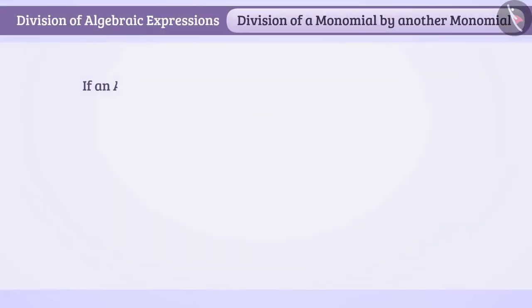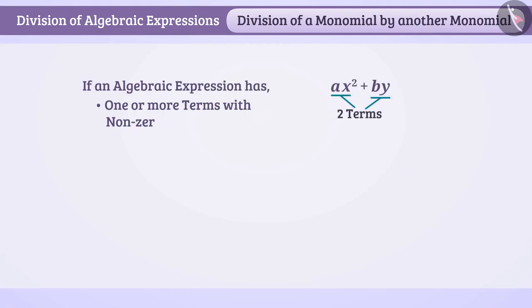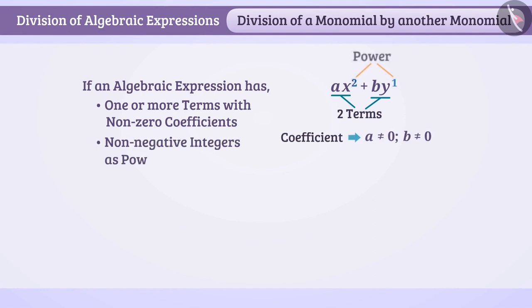If an algebraic expression has one or more terms which have non-zero coefficients and non-negative integers as powers of variables, then such expression is called a polynomial.